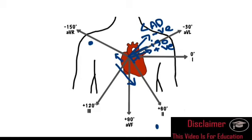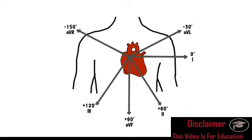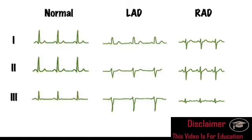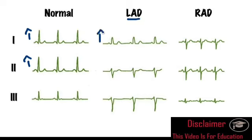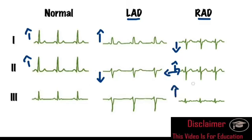Looking at this diagram: in a normal ECG you get a positive lead 1 and a positive lead 2. With left axis deviation you get a positive lead 1 but a negative lead 2. With right axis deviation you get a negative lead 1 and a generally positive lead 2 — though lead 2 is more isoelectric and lead 3 is positive. Lead 3 doesn't need much attention for calculating the axis.